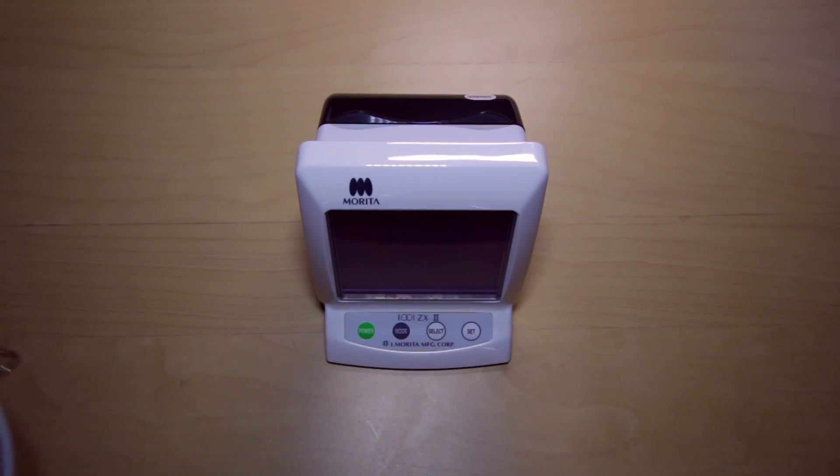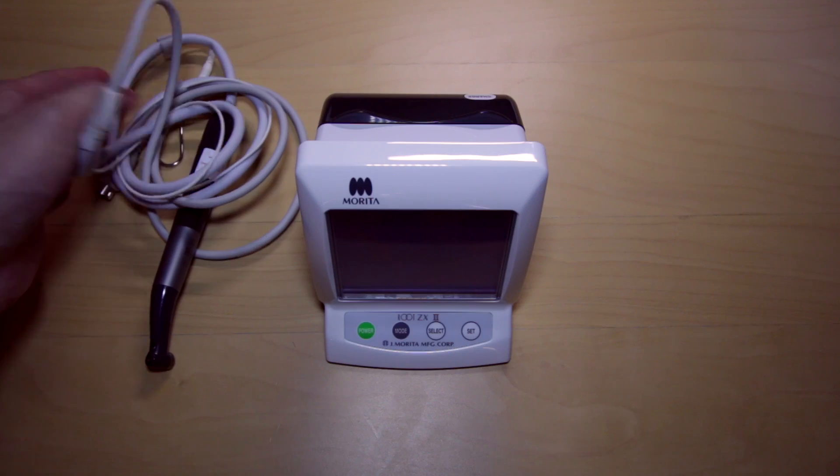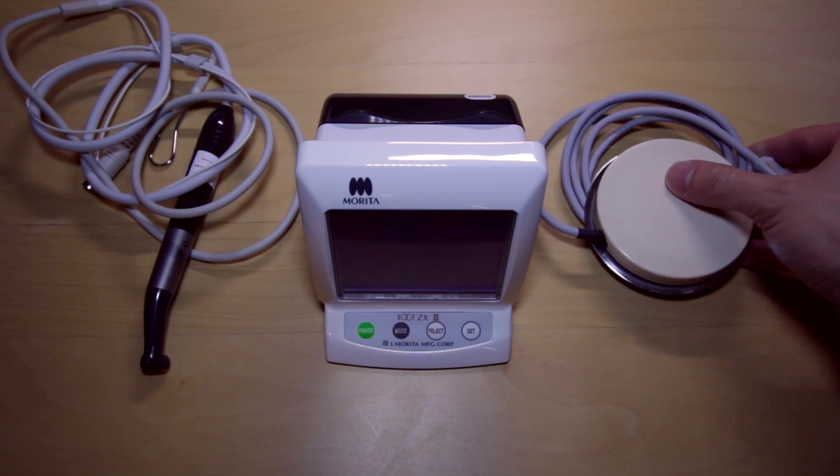You have your primary Root CX-2 device with the OTR module installed, handpiece, and foot pedal.